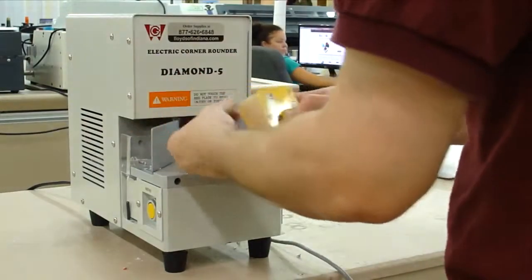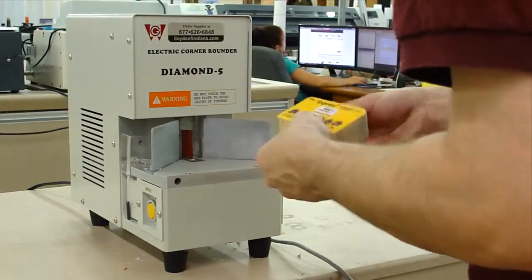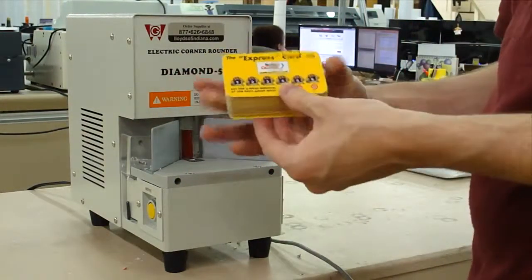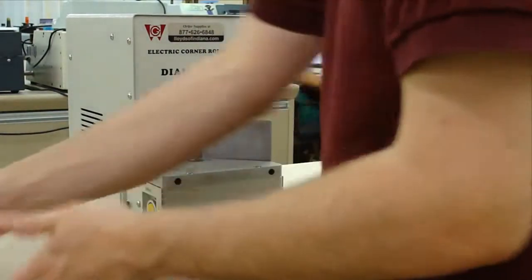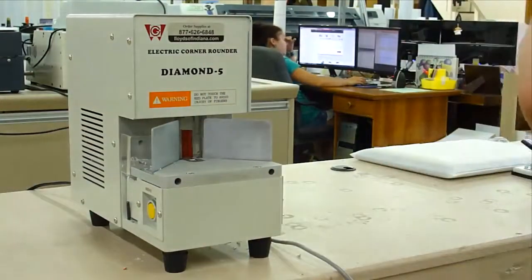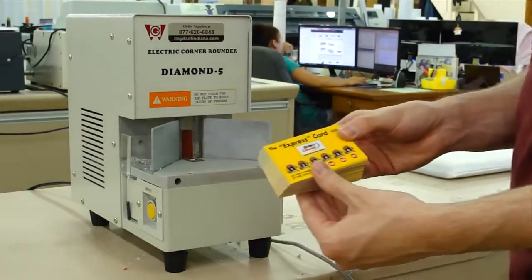Basically what you do is you put your cards into the slot there and then once it's set, you use the foot pedal to activate the die to come down and round whatever it is you're doing.